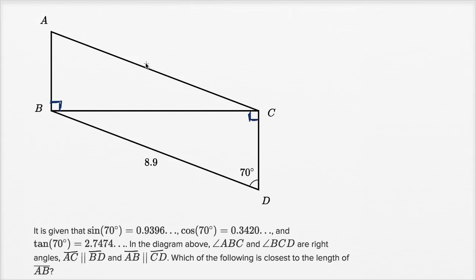So AC is parallel to BD, and AB is parallel to CD. AB is parallel to CD. And all of that looks the way it was drawn — it looks like they're parallel as well, but it's nice that they're telling us that, otherwise we can't really assume that.